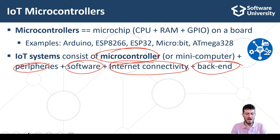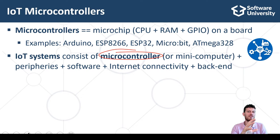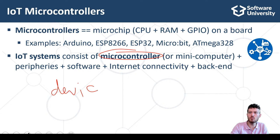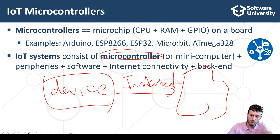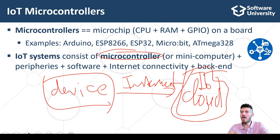IoT hardware devices collect data and send it to the backend system over the network. The backend system sends commands over the network to the IoT device and can configure and control it. IoT devices, together with the backend system that interacts with them, implement the concept of IoT.